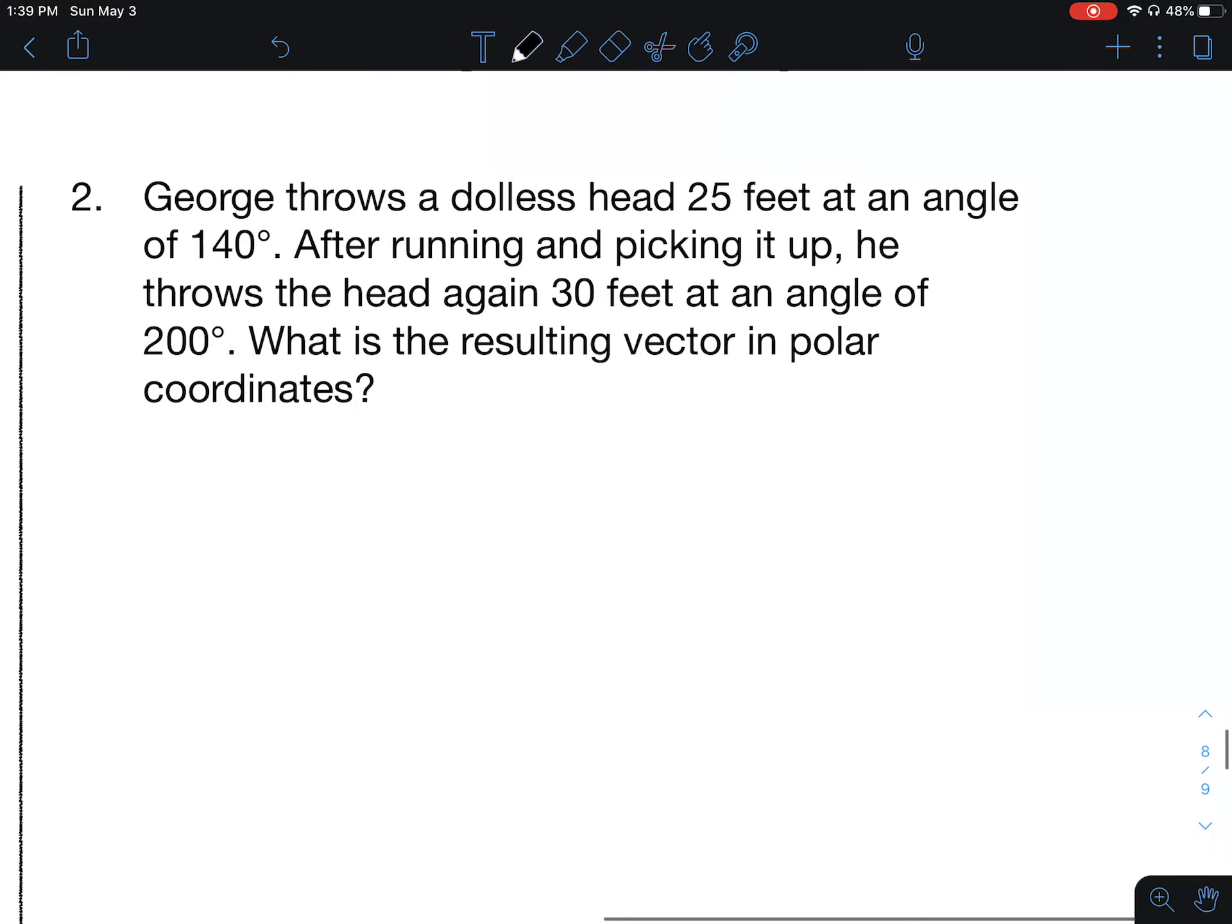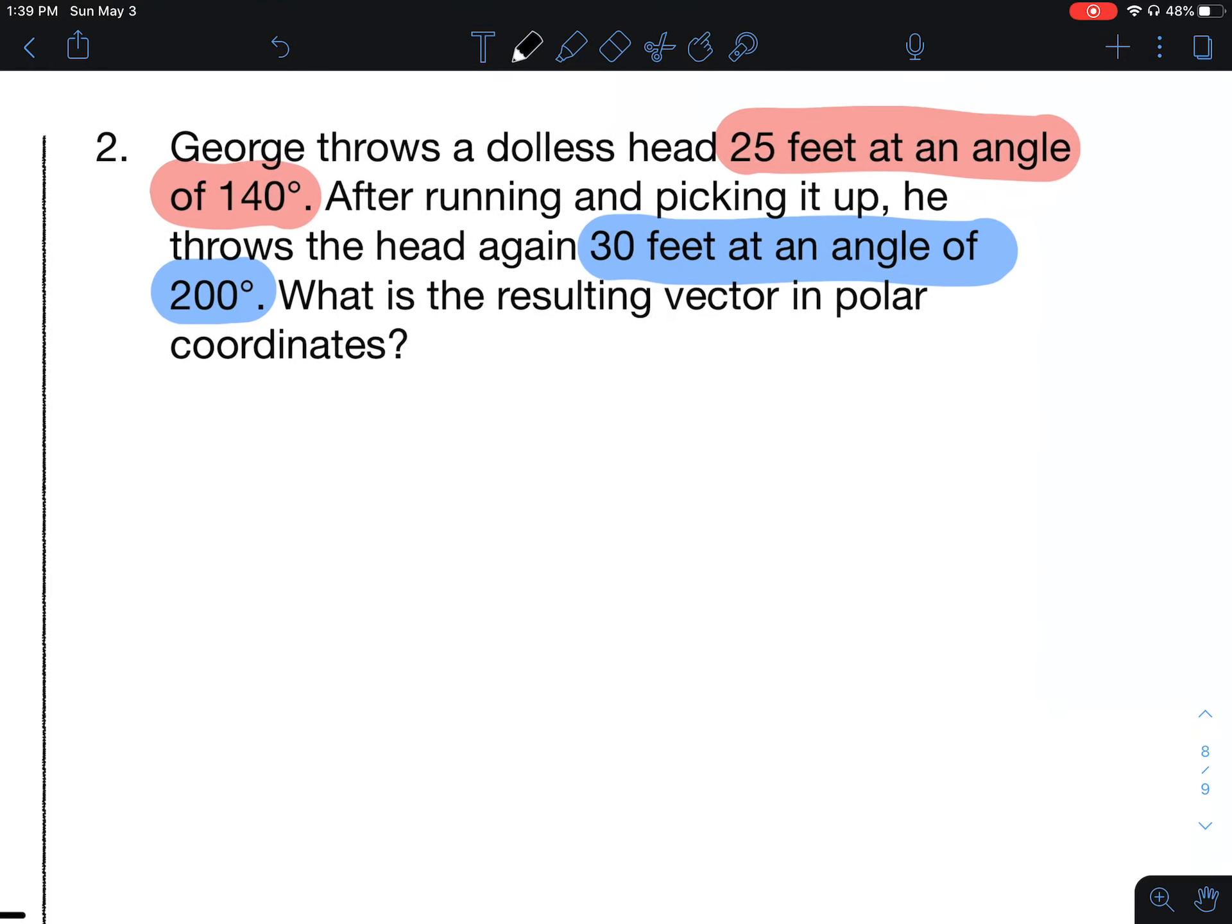Let's check out another one. Number two: George throws a dollless head 25 feet at an angle of 140 degrees. That is not going to be a special triangle. After running and picking it up, he throws the head again 30 feet at an angle 200 degrees. What's the resulting vector in polar coordinates?